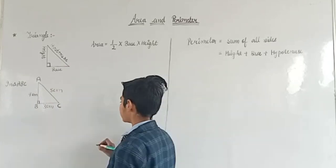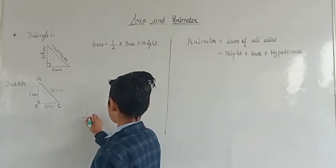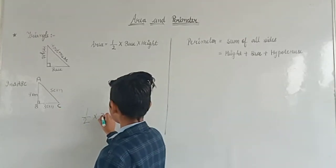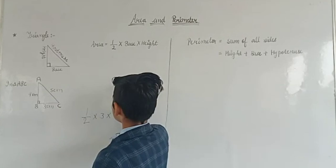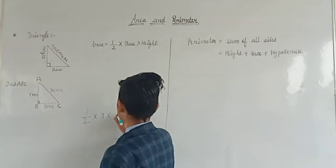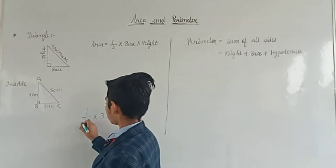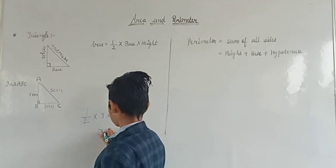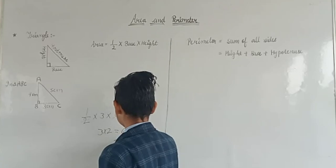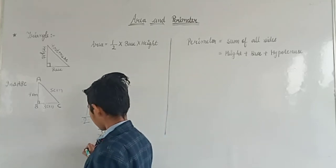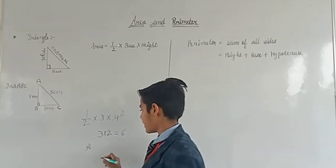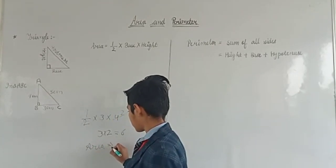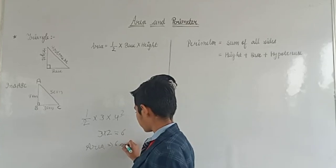So now we will solve it. Area = 1/2 × base × height. The base is 3 cm and the height is 4 cm. So 1/2 × 3 × 4: 4 divided by 2 is 2, and 2 × 3 is 6. So the area is equal to 6 cm².